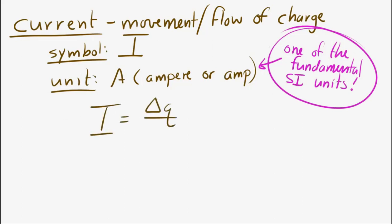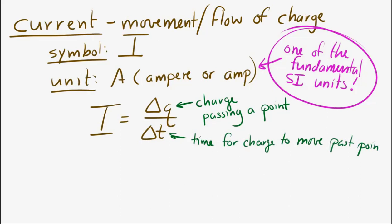The key equation for current is, current is equal to delta Q over delta T. Delta Q means the charge that's passing by a point. And delta T is how much time it takes for that charge to go by. So, if you're looking at a point in a conductor, and usually we're talking about wires. So, metal conducting wires here.